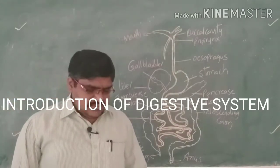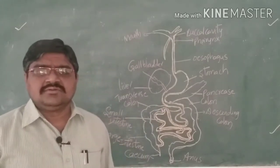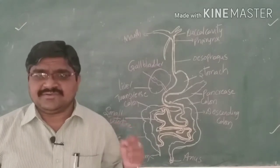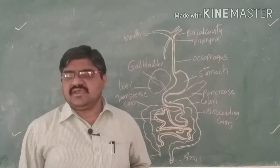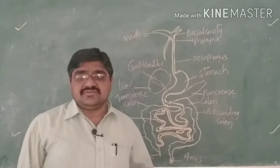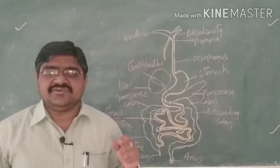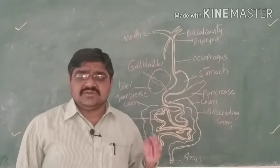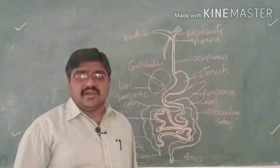Good morning students. In the last class we studied about tissues — a group of similar or dissimilar cells which are able to perform a specific function. There are four types of tissues: epithelial tissues, connective tissues, muscular tissues, and nervous tissues. Now we are going into another topic.